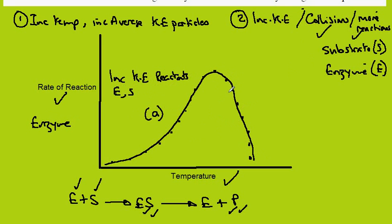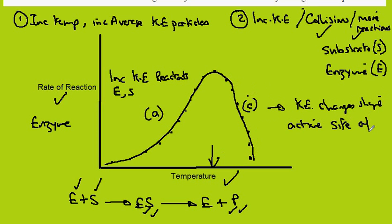However, we then find that after a given temperature, the rate of reaction declines very quickly. And this is because the kinetic energy is actually changing the shape of the active site of the enzyme, and so it doesn't work to produce product.